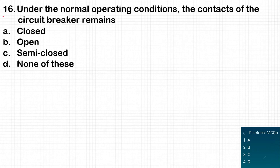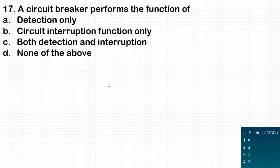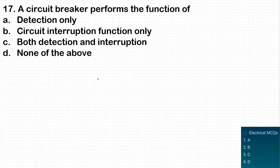The next question: the circuit breaker performs which function — detection only, circuit interruption only, both detection and interruption, or none of the above? A relay detects the fault, so the circuit breaker does not perform detection. It basically interrupts the circuit. So circuit interruption only is the correct answer.